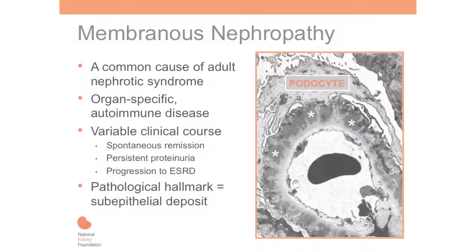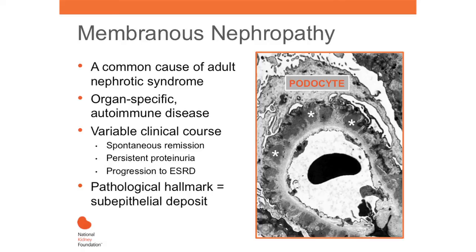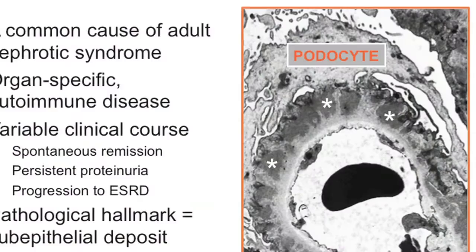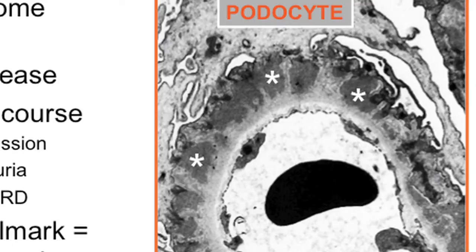Membranous nephropathy is a common cause of primary nephrotic syndrome in adults. The primary or idiopathic form is an organ-specific, antibody-mediated autoimmune disease in which the target antigen is located on the podocyte. The hallmark pathologic feature is a subepithelial deposit, which is an aggregate of antibody, antigen, and complement factors that sits in the subepithelial position below the podocyte.